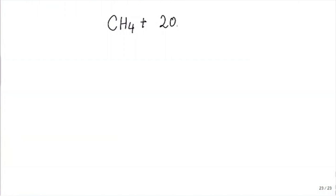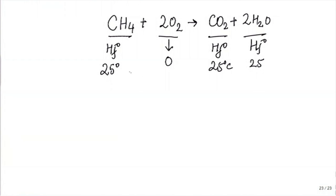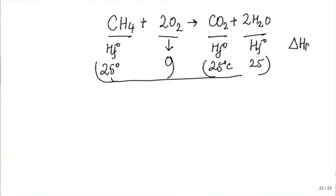Once this is done, if I want the heat of a reaction — say CH4 plus 2 O2 gives CO2 plus 2 H2O — then I find Hf0 for each species at 25 degrees C. I subtract the reactants from products to get delta HR. This is how I will get the heat of reaction.